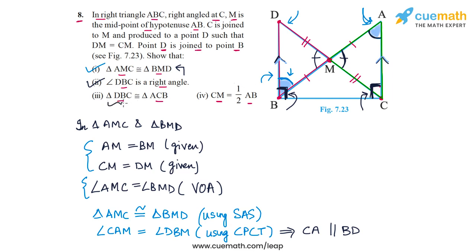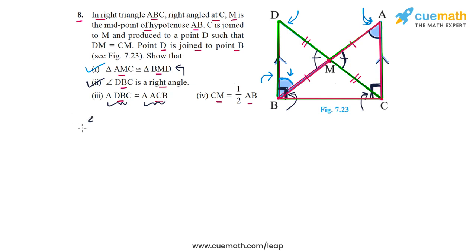Now for part three, we need to prove triangle DBC is congruent to triangle ACB. Let me highlight these two triangles. In triangle DBC and triangle ACB, we note that BC equals BC since it is common to both triangles.